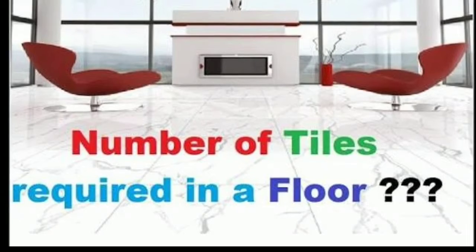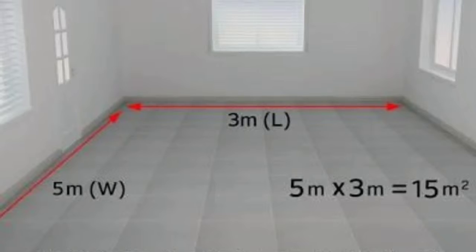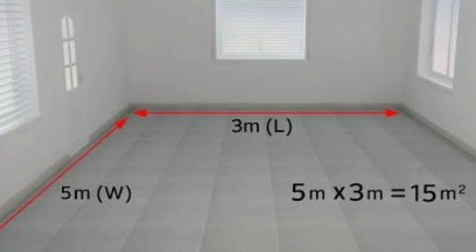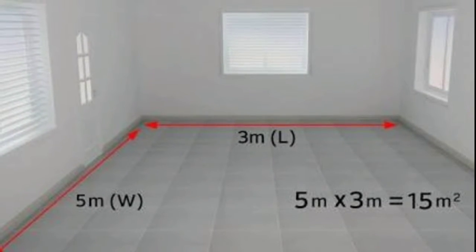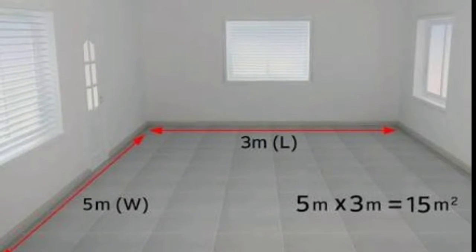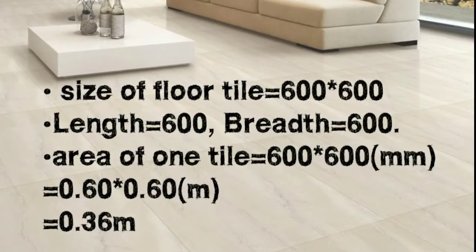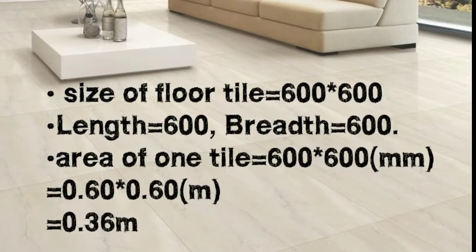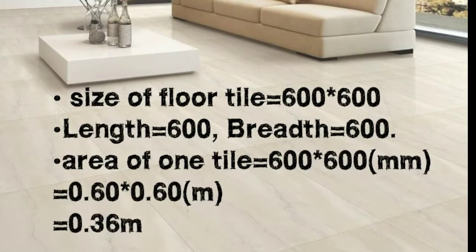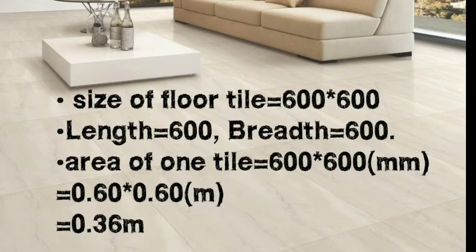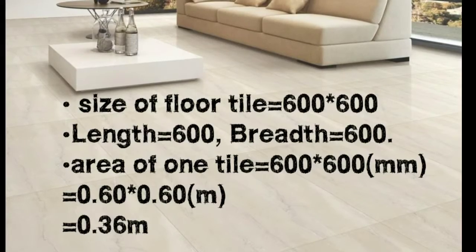Now we will find the number of tiles required for a floor. We have a room with area 3 meters by 5 meters, where 3 meters is the length and 5 meters is the breadth. So the floor area is 5 × 3 = 15 square meters. Now we find the area of a single tile: the tile is 600 mm × 600 mm, which converts to 0.6 × 0.6 = 0.36 square meters.